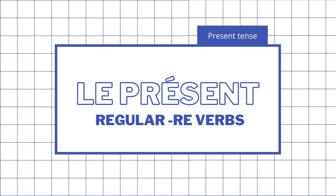Hopefully you can now conjugate into the present tense using regular RE verbs. If you want to learn how to conjugate IR verbs and ER verbs as well, make sure to watch the other videos.